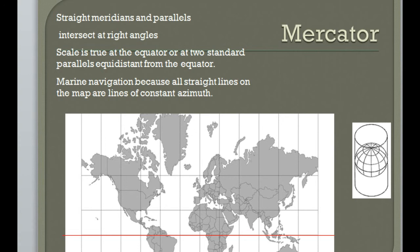Here is a cylindrical projection, a Mercator projection. You have very straight parallels and meridians, but your latitude lines are not equally spaced, and your longitude lines are. Scale is true at the equator. It's used for marine navigation.